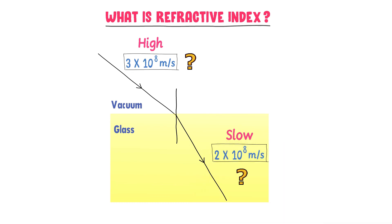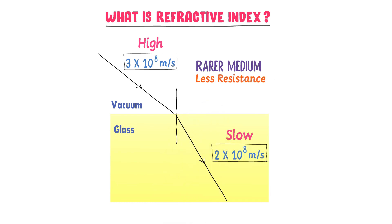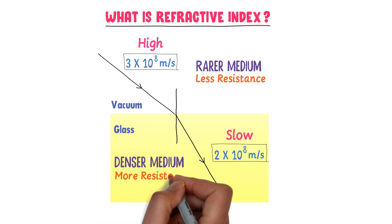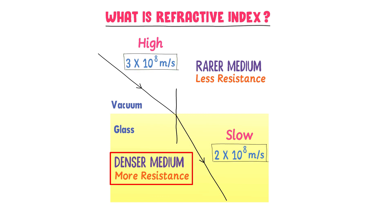Why is the speed of light high in the vacuum and slow in the glass? The answer is simple: vacuum is an optically rarer medium, meaning it shows less resistance to the speed of light, while glass is an optically denser medium, meaning it shows more resistance to the speed of light. So if a medium is less optically dense, speed of light is high; if a medium is more optically dense, speed of light is slow.